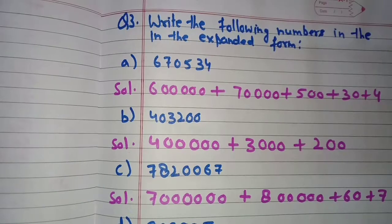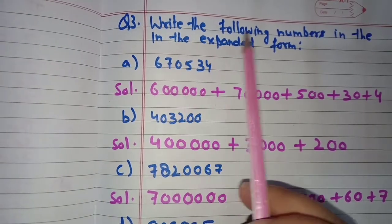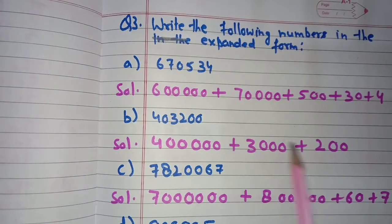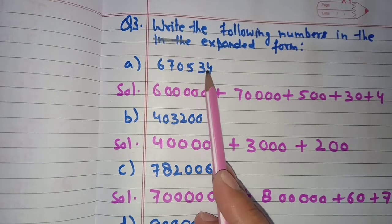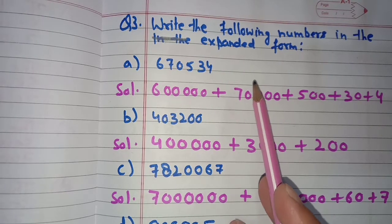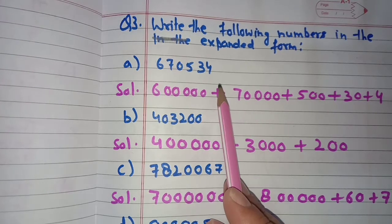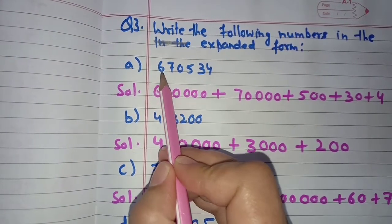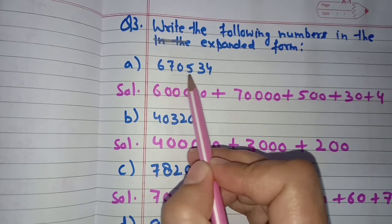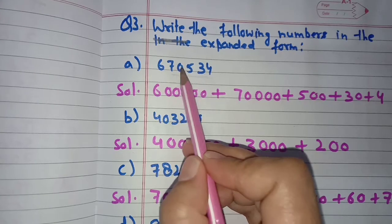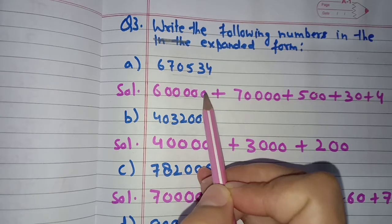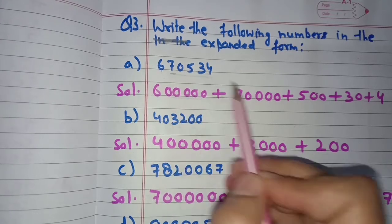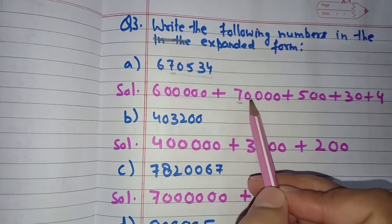Question number three: write the following numbers in expanded form. The first number is 6,70,534. To write the expanded form, we write the place value of each digit. Starting with 6: count the digits after it — there are 5 — so we write 6,00,000 (six lakh). Then 7: there are 4 digits after it, so its place value is 70,000 (seventy thousand).